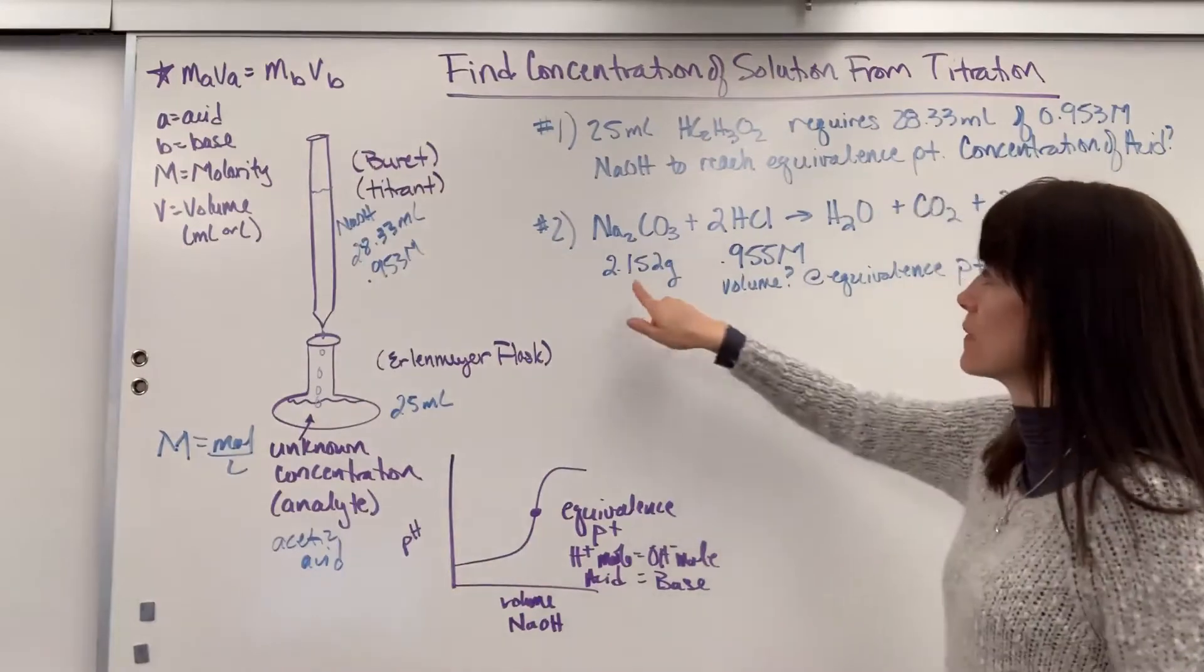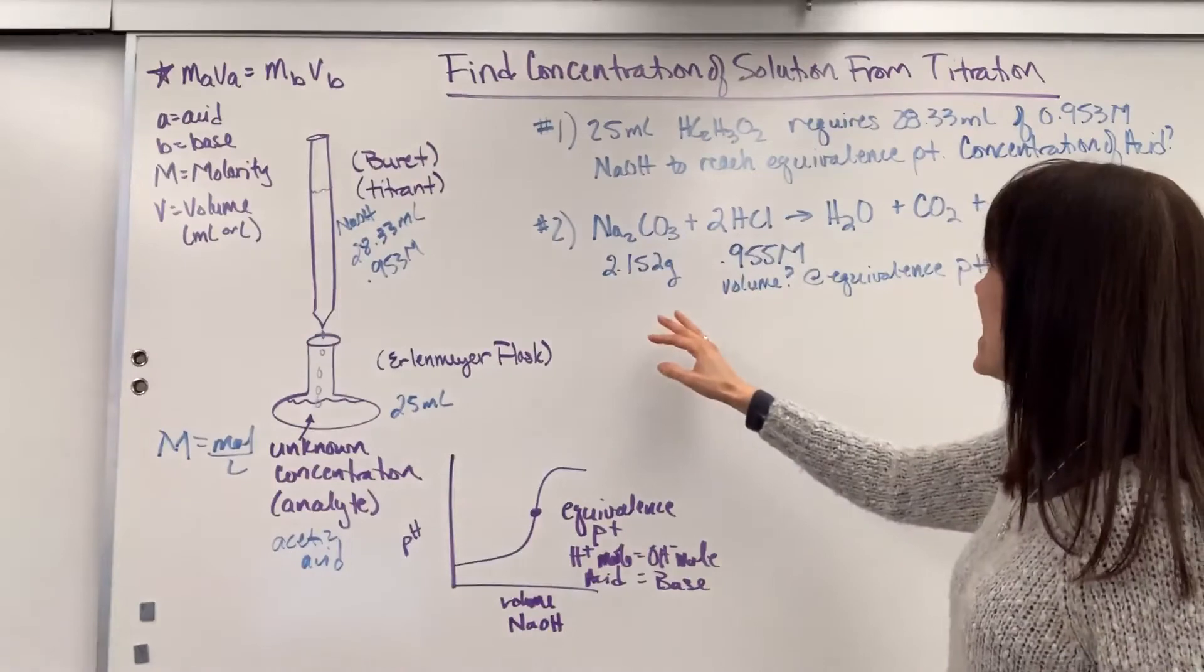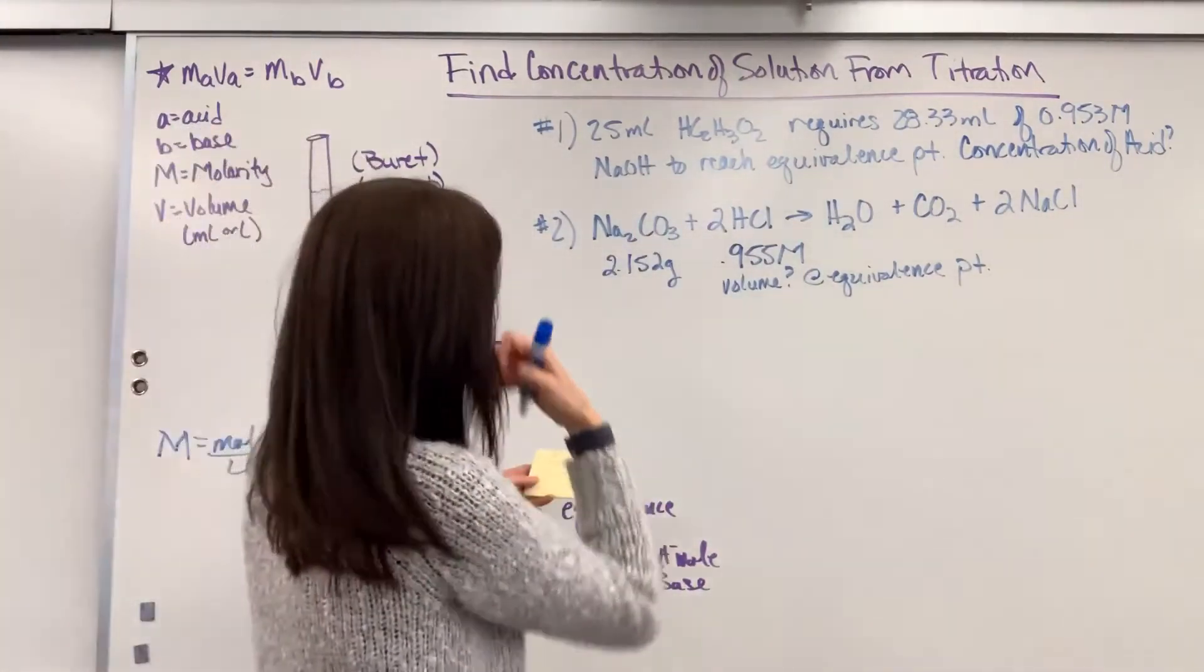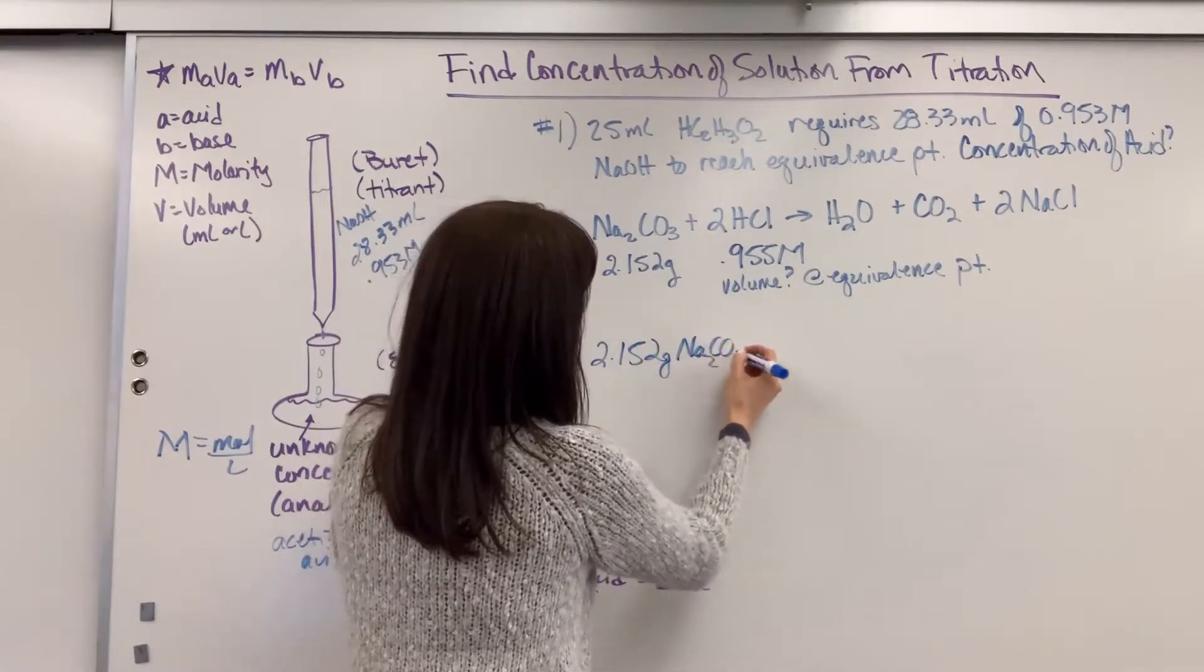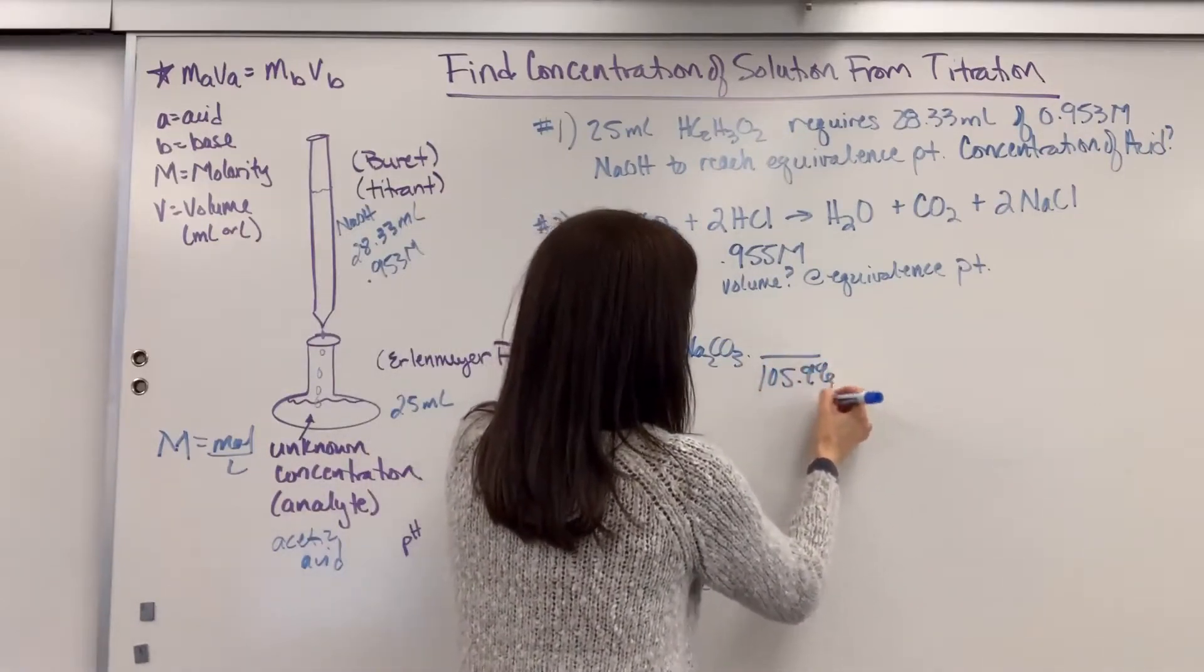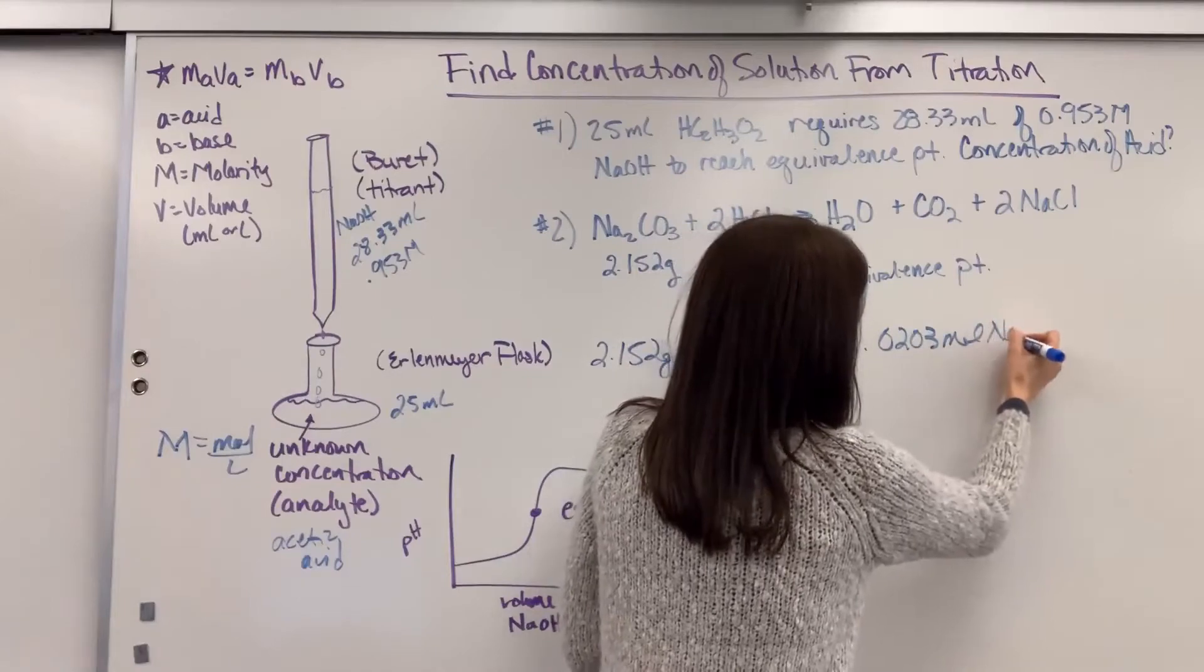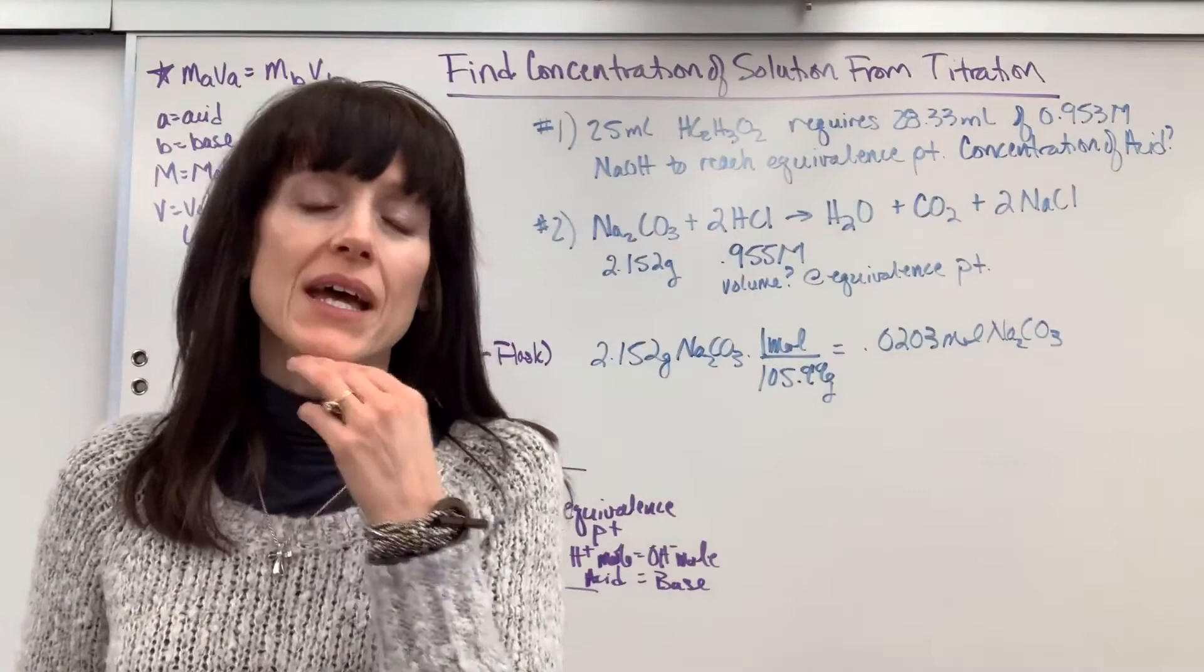So let's go ahead and find the moles of the sodium carbonate. And that will be the moles that we use as hydrochloric acid. So I did the molar mass, found the molar mass for the sodium carbonate. We're going to begin with the 2.152 grams of sodium carbonate. And its molar mass is 105.99 grams per one mole. When we do that math, it's 0.0203 moles of sodium carbonate.